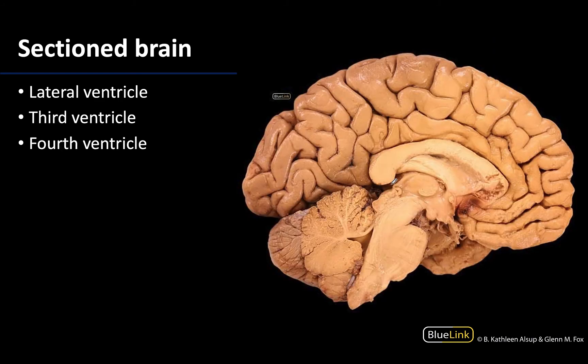Now let's look at an actual brain — not a model. This is a hemisected brain, meaning we are looking at the left half of the brain in this specific case, which allows a better view of the more internal portions. I'm about to point out the general areas of where the ventricles would be. Recall that especially with the third and fourth ventricles, these are in the midline, and you would really need the other half of the brain to complete the walls of the ventricular space.